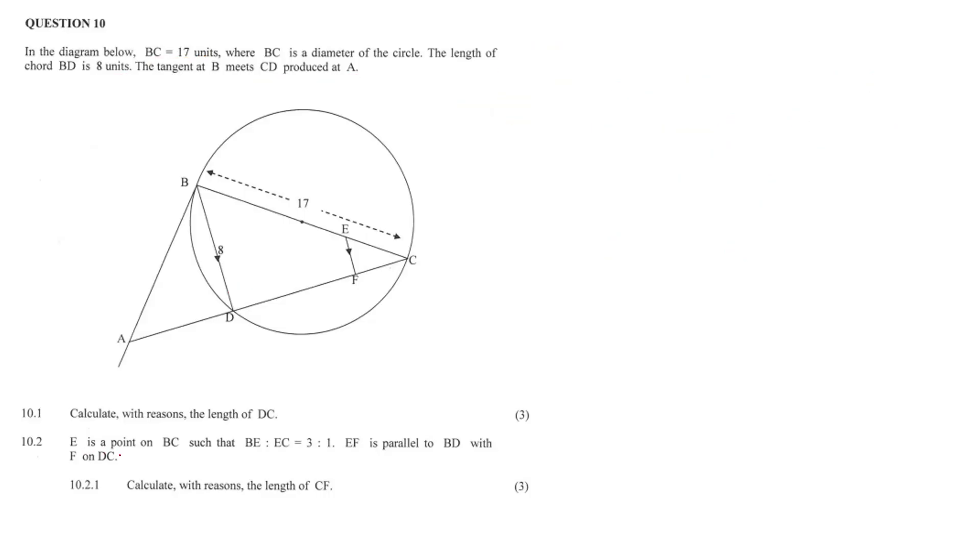In question 10.2, E is a point on BC such that BE is to EC, 3 is to 1. EF is parallel to BD with F on DC. Ratios 3 is to 1. So if BE is, let's say, 9, EC is going to be 3.